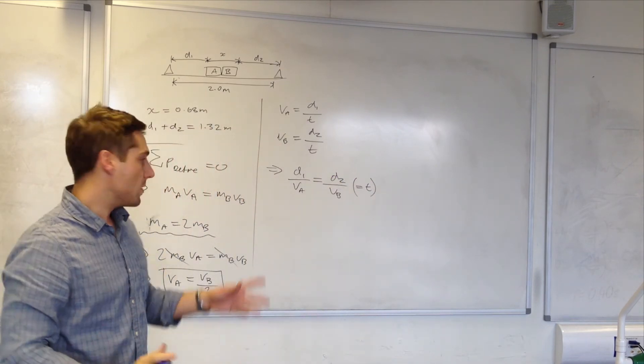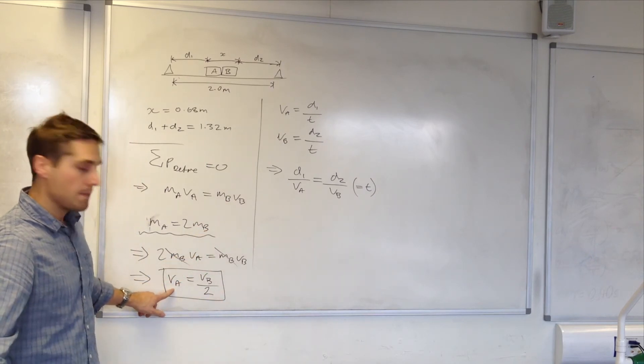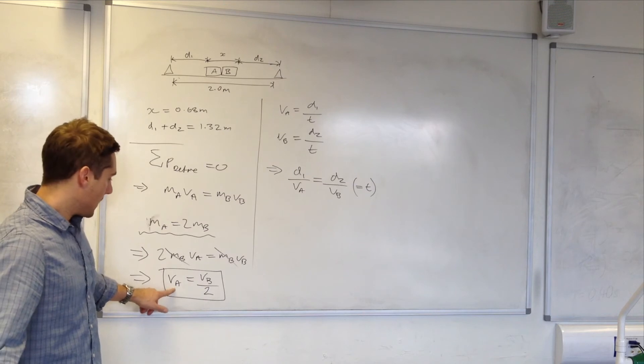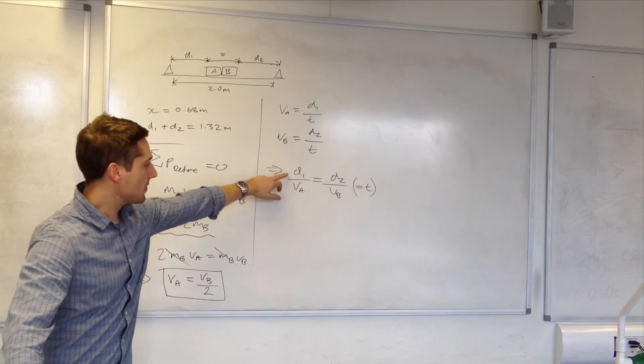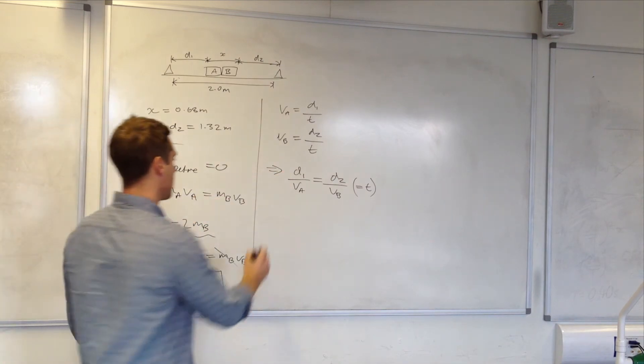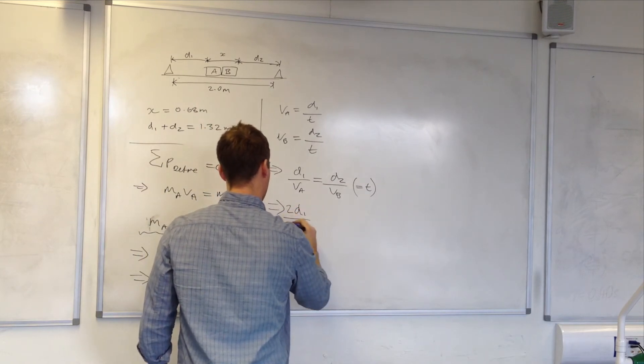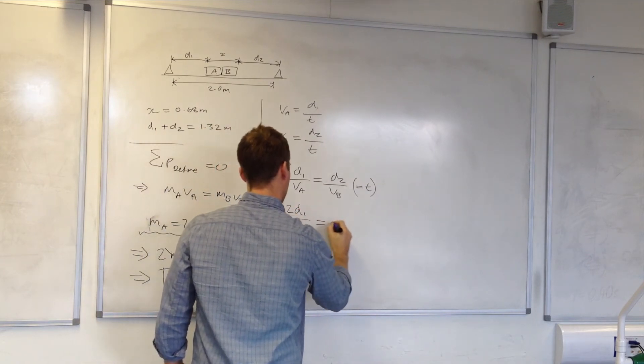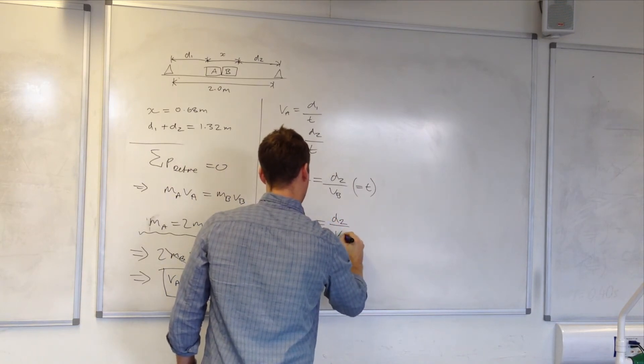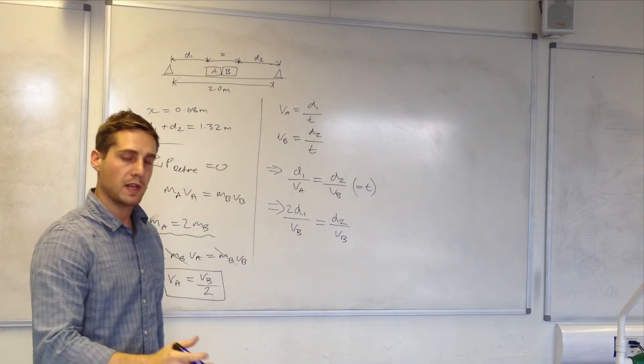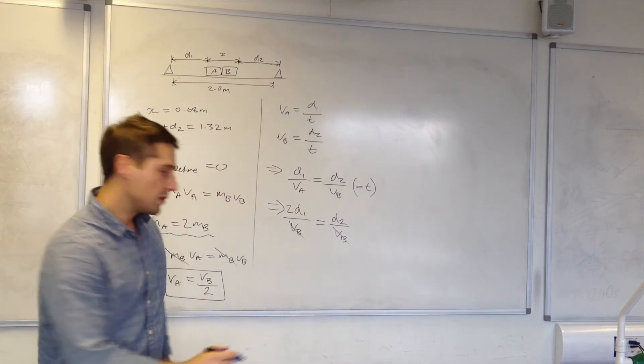So I've got an equation with distance and velocity. Now I will make this substitution here. So VA equals VB over 2. So if I substitute that in here I'll get 2 times D1 divided by VB. Again, a simplification for VB. 2D1 equals D2.